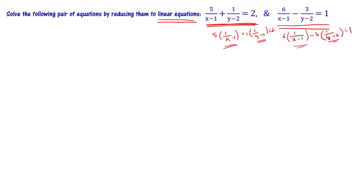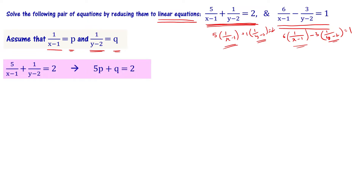Now, let me assume that 1 by (x minus 1) equals p, and 1 by (y minus 2) equals q. So the first equation becomes 5p plus q equal to 2, and the second equation is 6p minus 3q equal to 1.